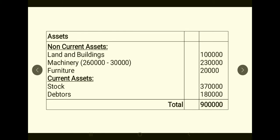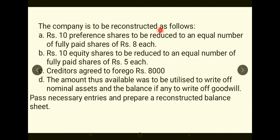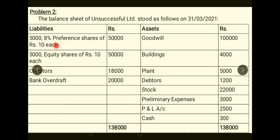Now moving on to Problem 2. The balance sheet of Unsuccessful Limited is given. It includes Preference Shares, Equity Shares, Creditors, and Bank Overdraft on the liabilities side, and Preliminary Expenses, P&L Account, Goodwill and other assets on the assets side. The company is to be reconstructed as follows.